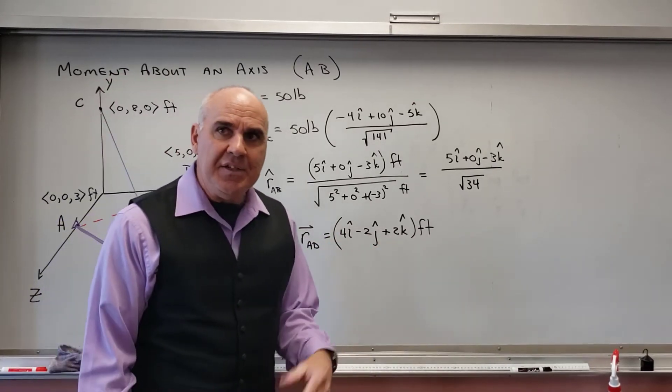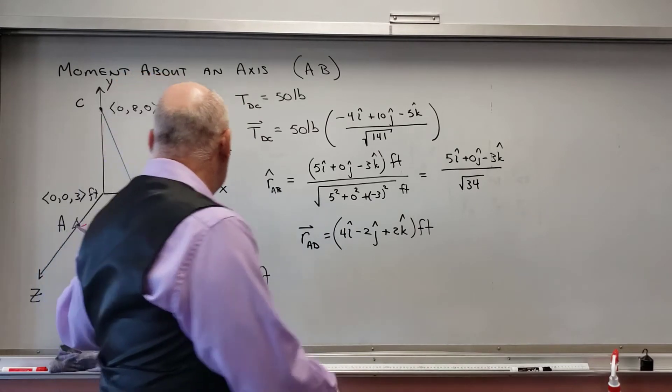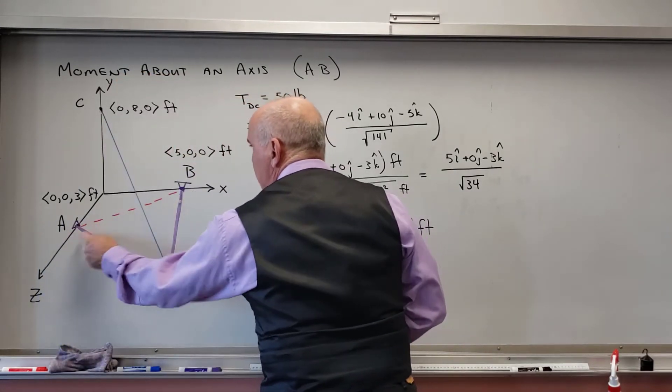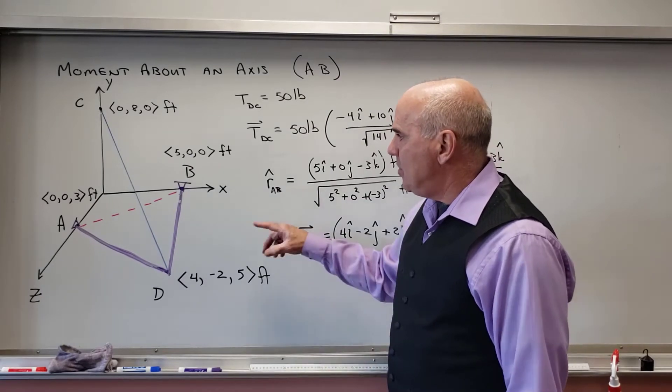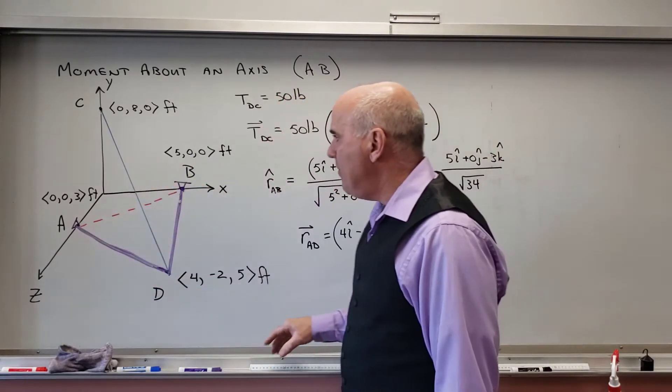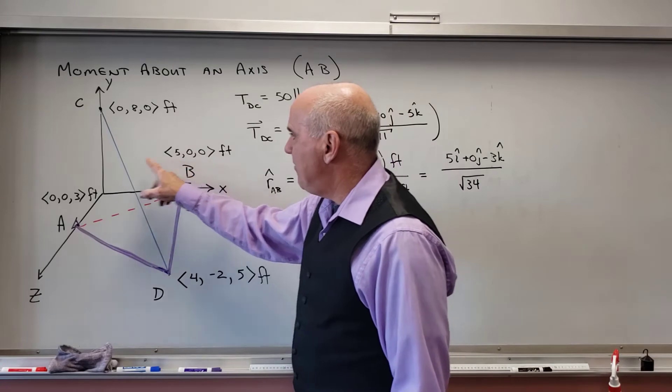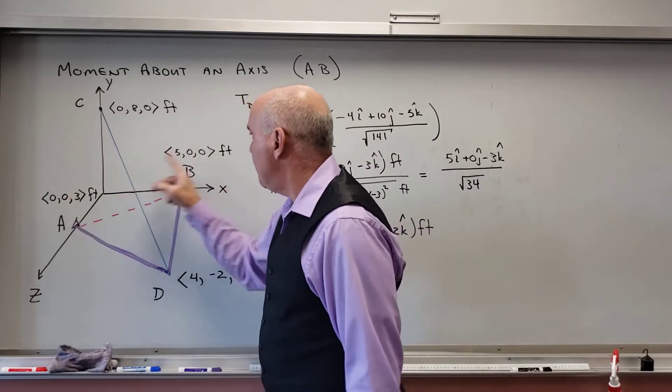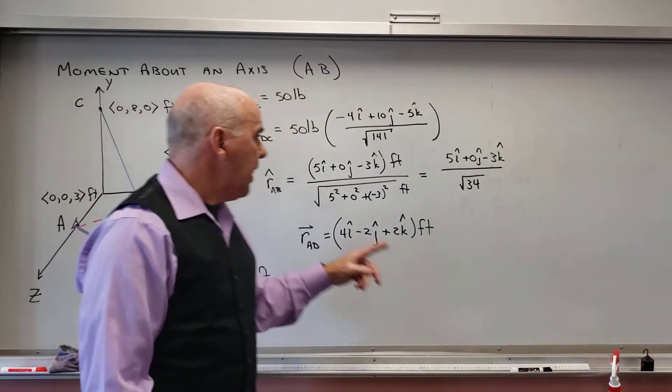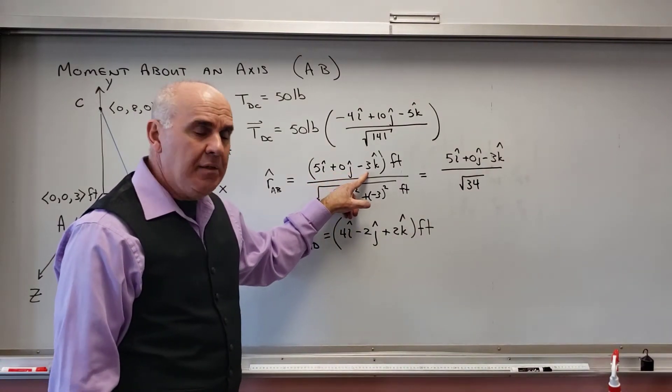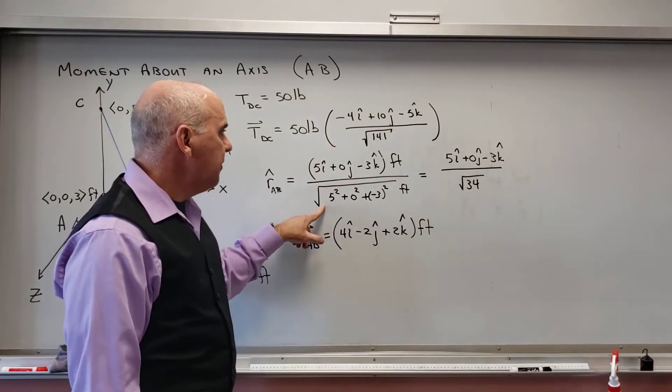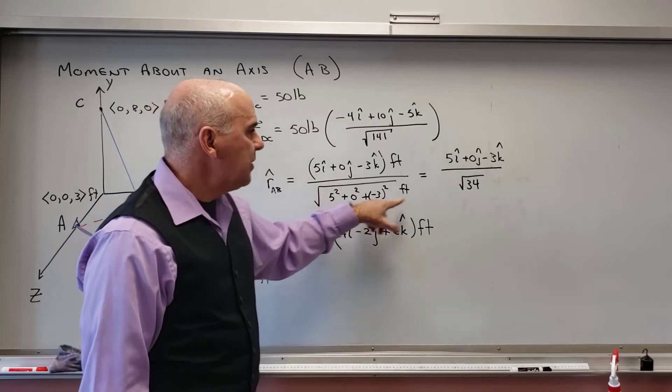And then the last thing I need is the unit vector from A to B. I need the unit vector from A to B. And so I'm going to choose R_B minus R_A. And so that's just going to be 5 minus 0, 0 minus 0, and 0 minus 3. So that's 5i, 0j, -3k.